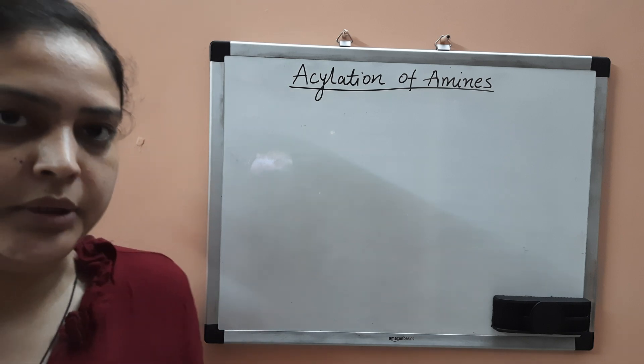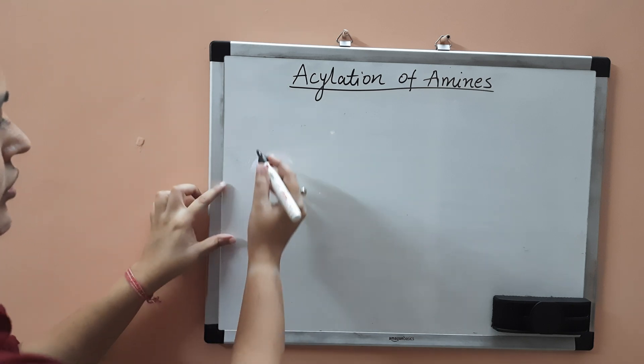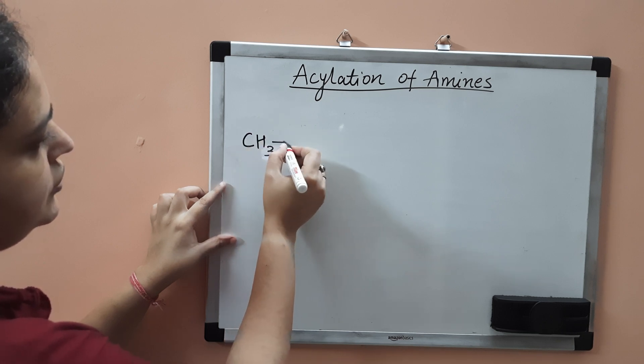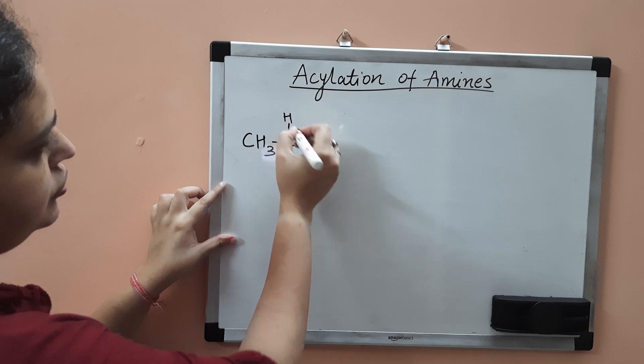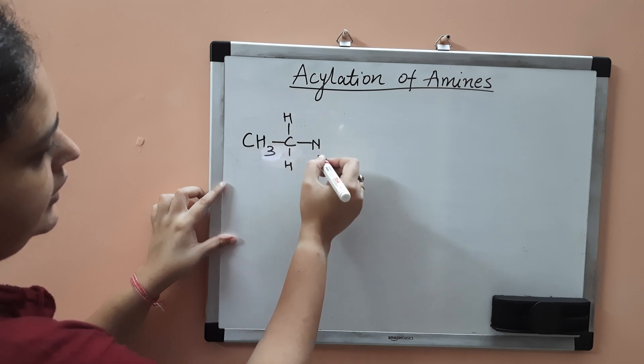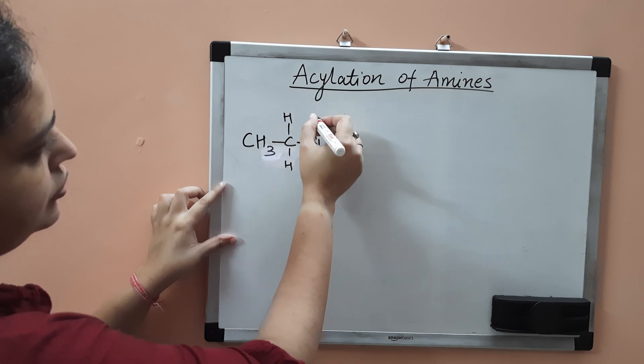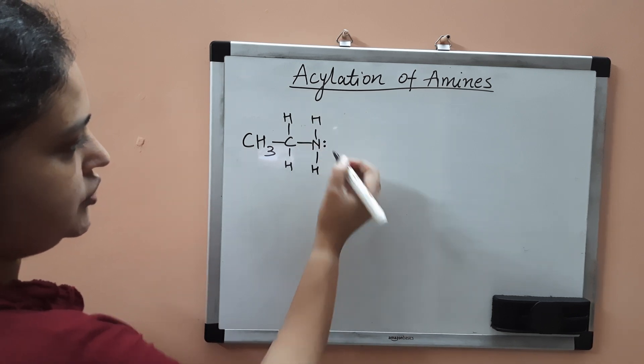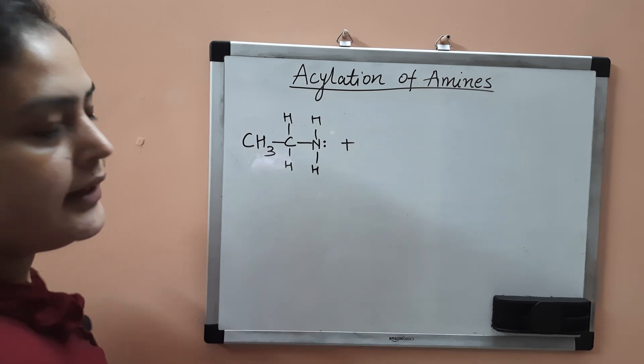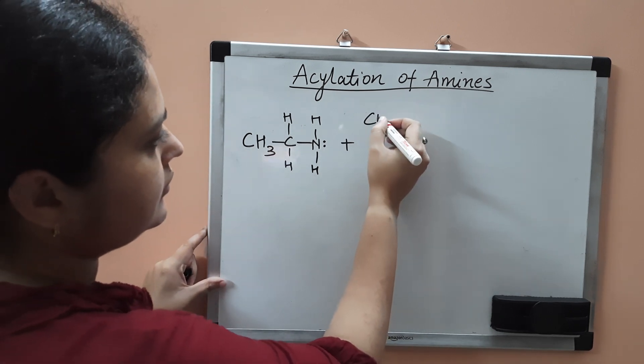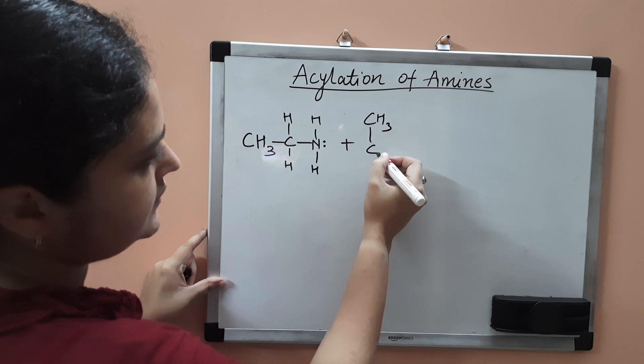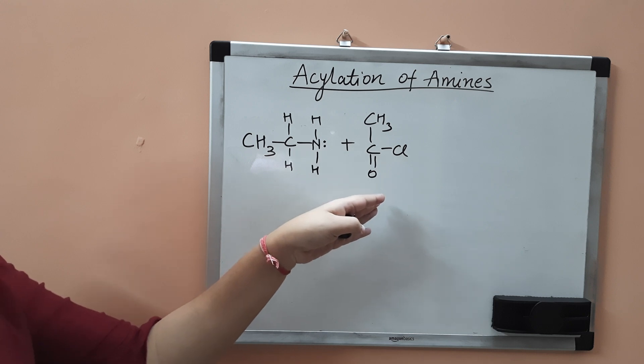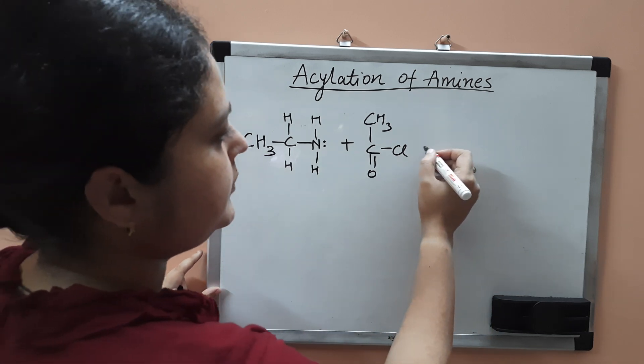We take ethane amine. The structure of ethane amine is CH3CH2NH2, and it has one lone pair of electrons on the nitrogen atom. If you add acid chloride CH3C double bond O Cl, what will be the product?